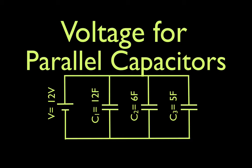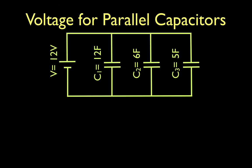In today's video I am going to go over voltage for parallel capacitors, and this is the circuit we're going to use. We have three capacitors C1, C2, and C3. They are 12, 6, and 5 farad capacitance respectively.